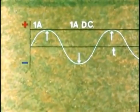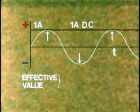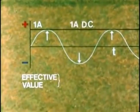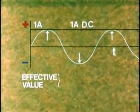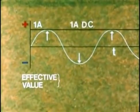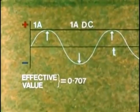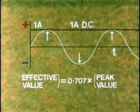Although the peak value of the AC is one amp, its effective value is considerably less than one amp. In fact, there's a formula for the effective value of the alternating currents or voltages. Its effective value equals 0.707 times peak value.